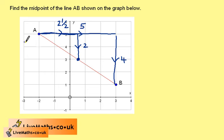And since A is the point minus 2 and 5, the midpoint is 2.5 across from minus 2 and then 2 down from 5, which is at a half, 3.